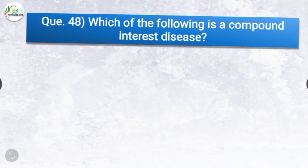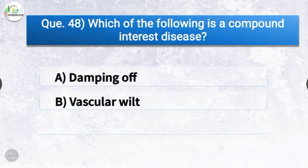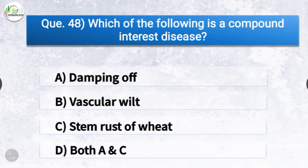Question number forty-eight: Which of the following is a compound interest disease? The options are damping off, vascular wilt, stem rust of wheat, or both A and C. The correct answer is option C, stem rust of wheat. Stem rust of wheat is a compound interest disease. Compound interest diseases, or polycyclic diseases, are characterized by multiple generations of spores produced in a year.